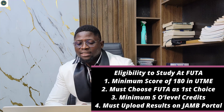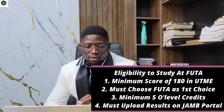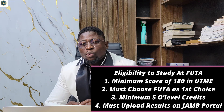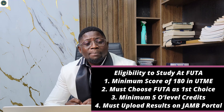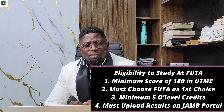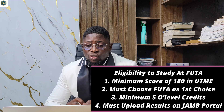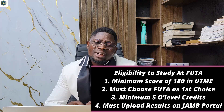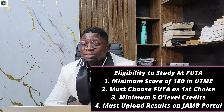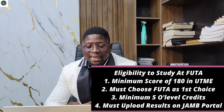Now let's look at the eligibility to study in FUTA. Number one: candidates must have scored at least 180 in the UTME conducted by JAMB. For Federal University of Technology Akure, the minimum JAMB score you should get is 180. If you get 179 you will not be considered by FUTA. The least score you may have is 180.